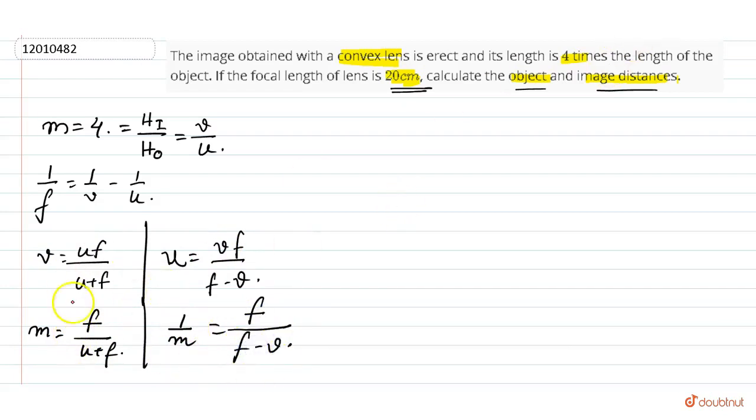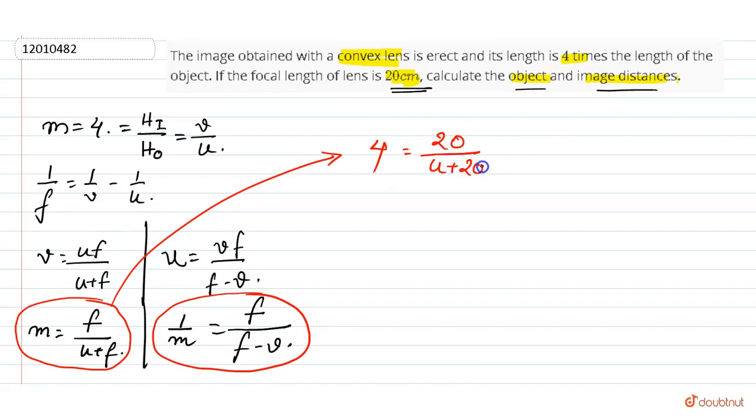If you see this formula, we know the value of m and f. We can find the value of u, so we will use that formula. Magnification is 4, f is 20, equals f upon u plus 20. We will get u from this formula, so u value is minus 15 centimeters.